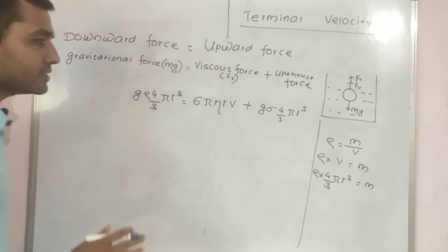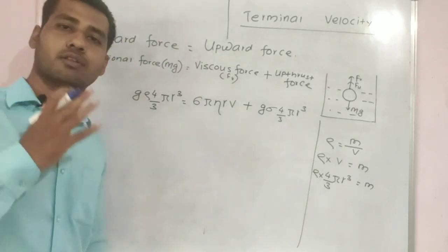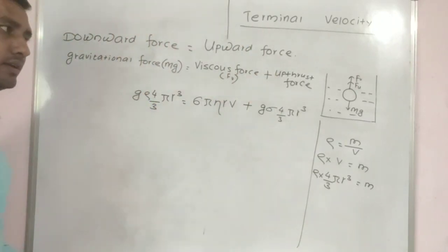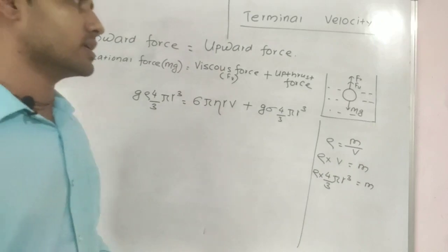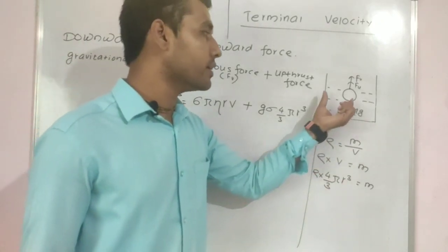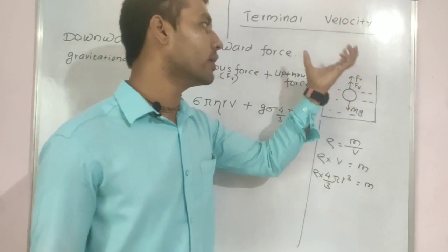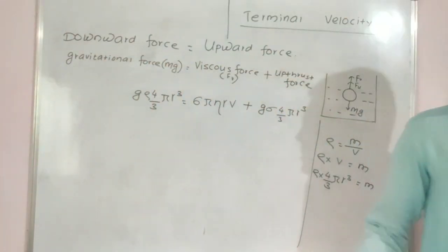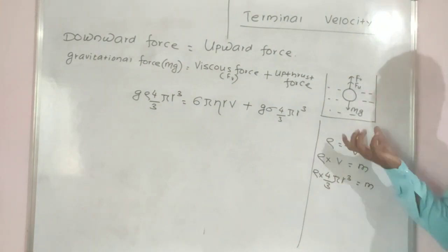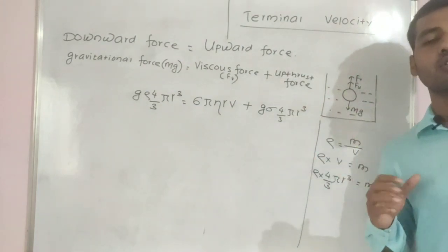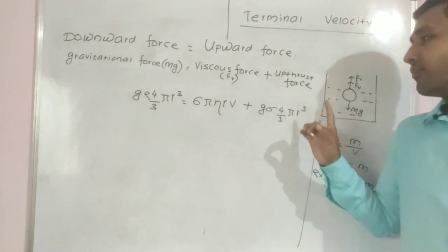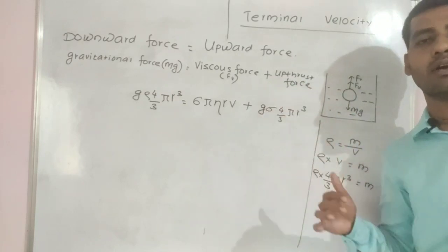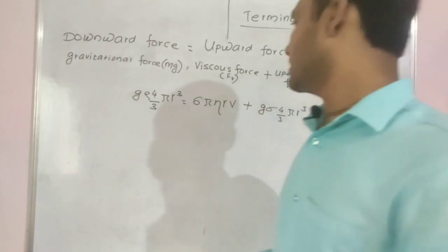Our target is to find the expression for terminal velocity. At terminal velocity, the downward force equals the upward force, so the net force is zero and the object moves at constant velocity. Since viscous force is directly proportional to velocity, as viscous force increases, velocity also increases until equilibrium is reached.